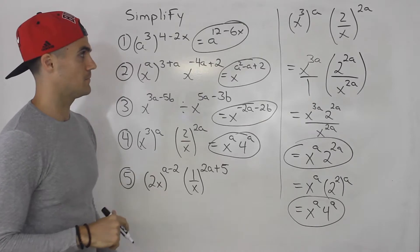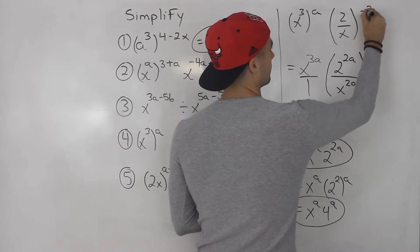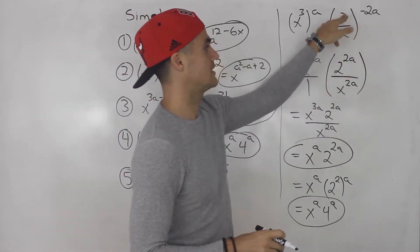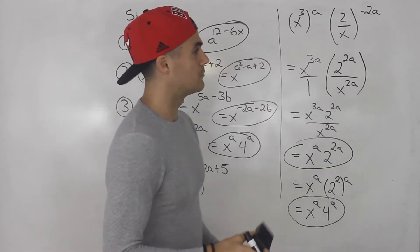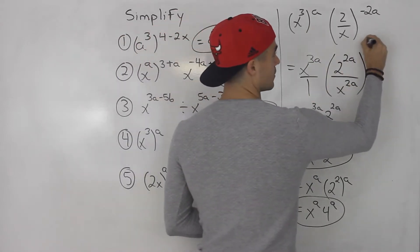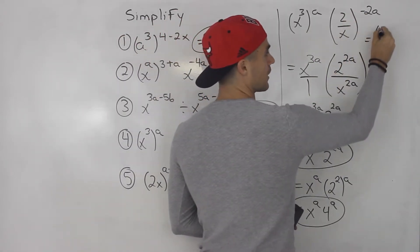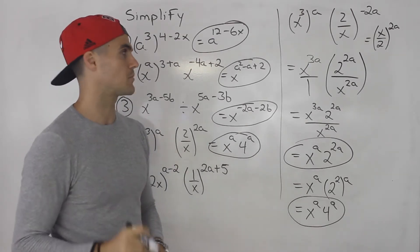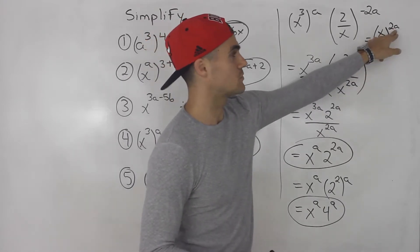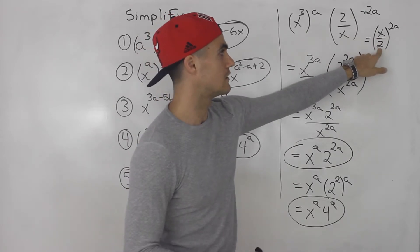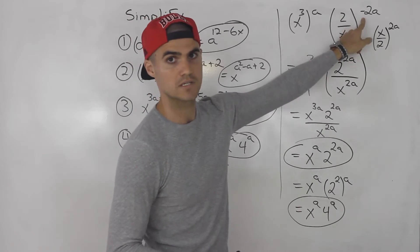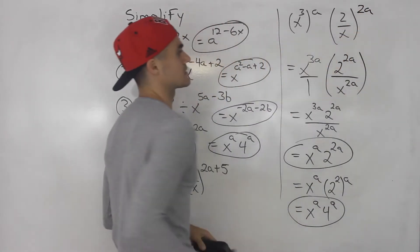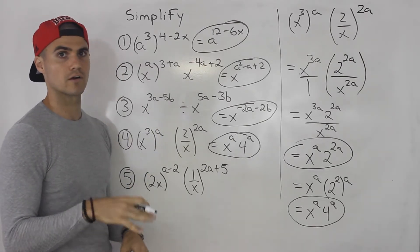One more note: what if this exponent was negative two a instead of positive two a? Because it's a negative exponent, an easier approach is to first flip the fraction. So two over x to the power of negative two a can be rewritten as x over two, to the power of positive two a. Remember: a fraction to the power of a negative exponent — flip the fraction, make the exponent positive. Then distribute the positive exponent: x to the power of two a over two to the power of two a. So it would just be flipped over if the exponent were negative two a.